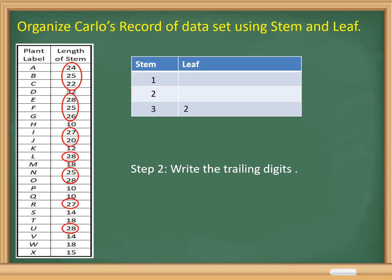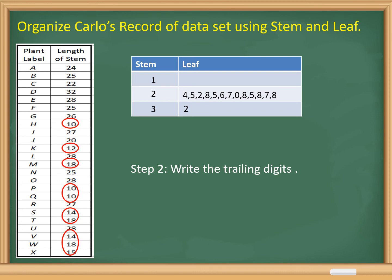The trailing digits for stem 2 are: 4, 5, 2, 8, 5, 6, 7, 0, 8, 5, 8, 7, and 8. The data values for stem 1 are: 10, 12, 18, 10, 10, 14, 18, 14, 18, and 15. The trailing digits for stem 1 are: 0, 2, 8, 0, 0, 4, 8, 4, 8, and 5.